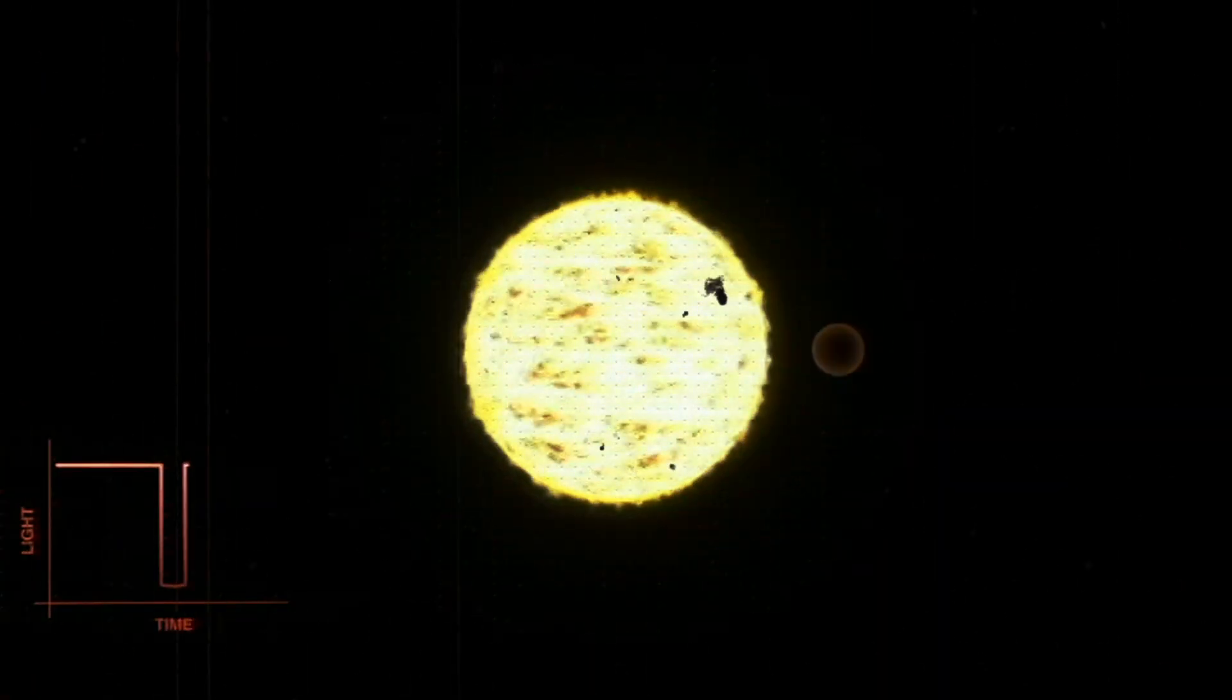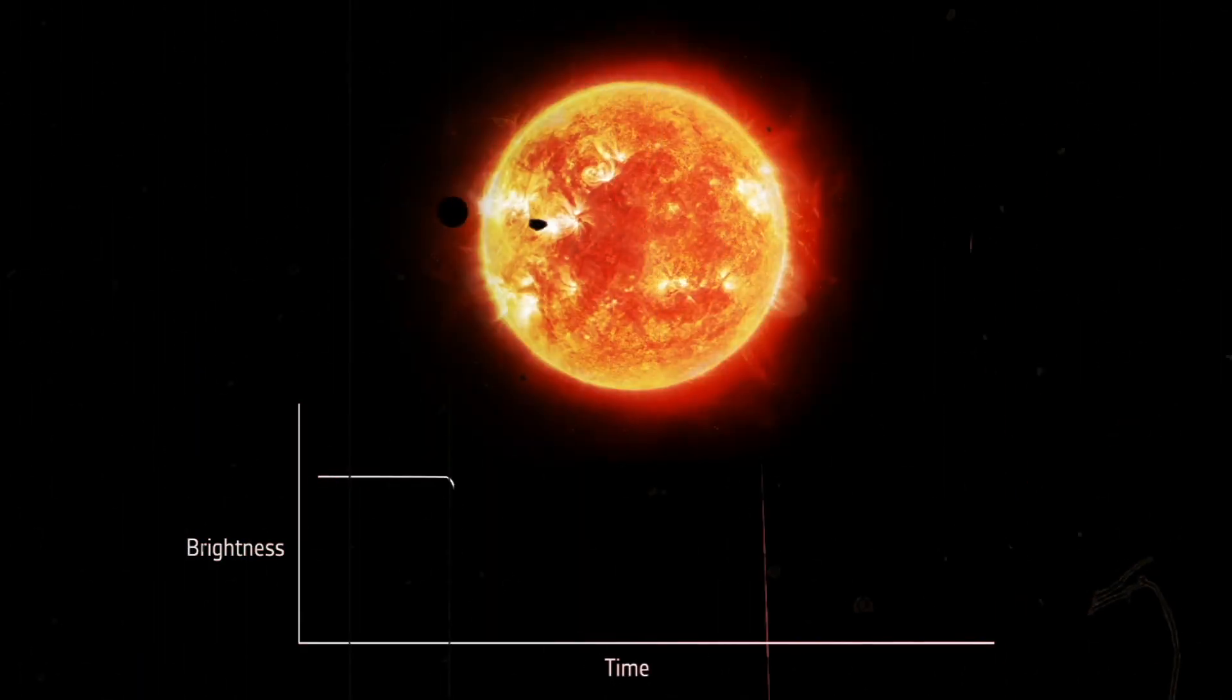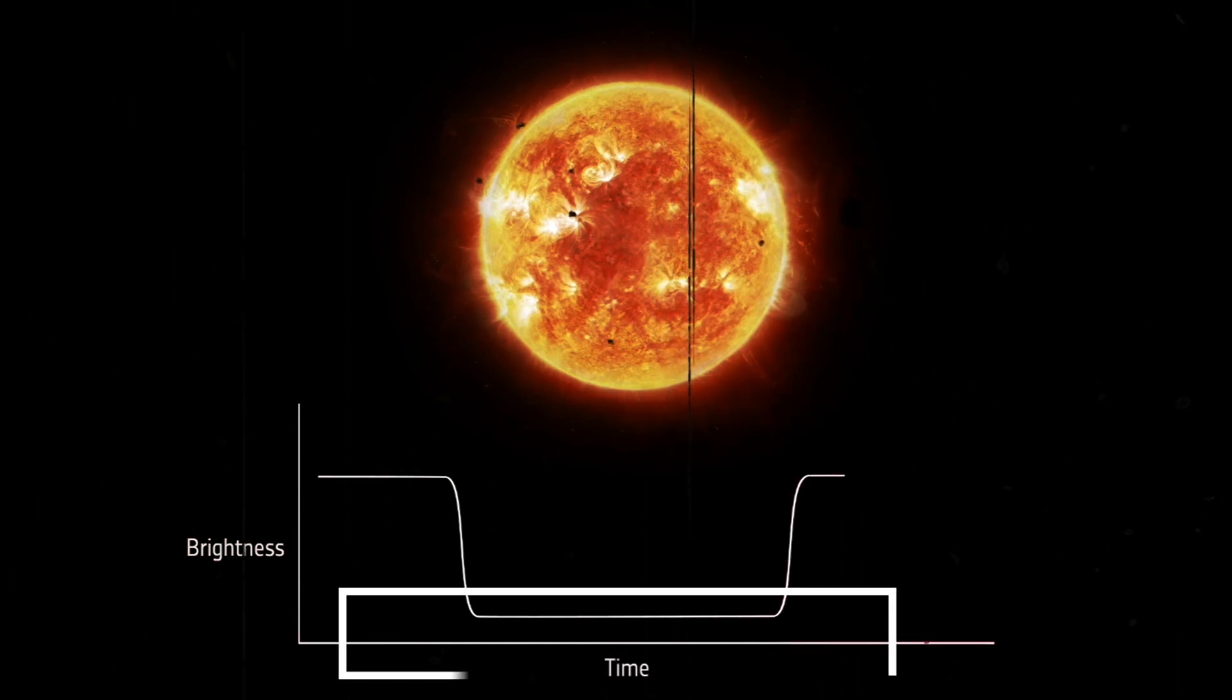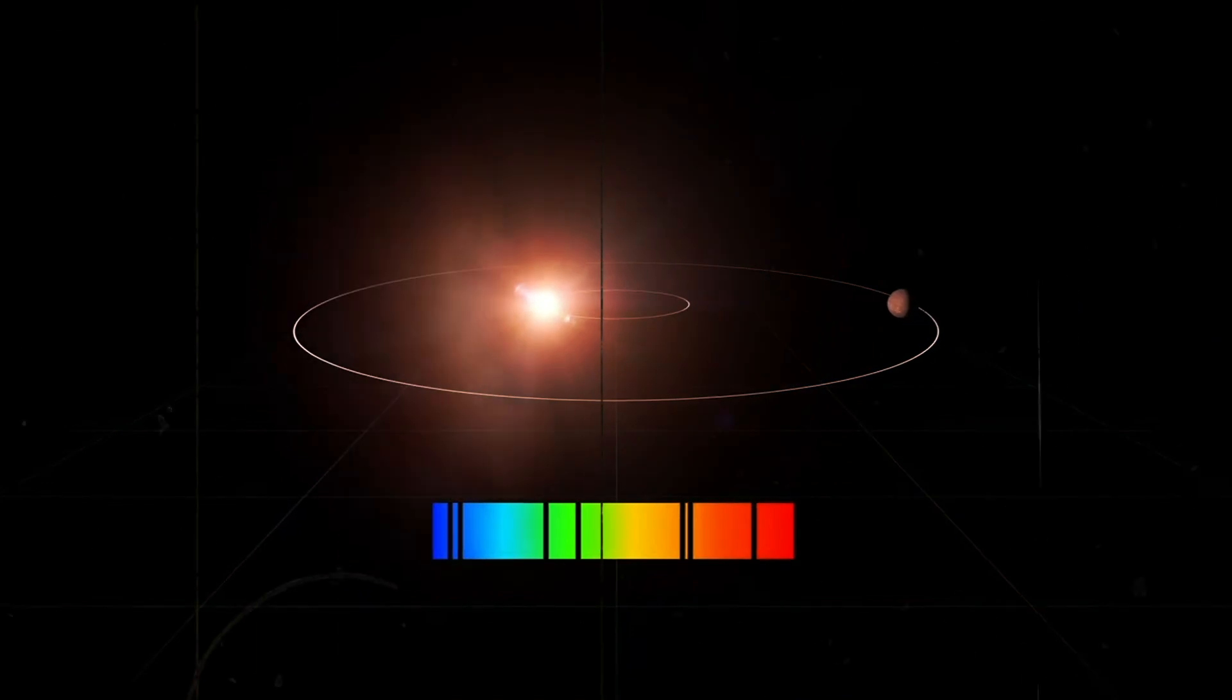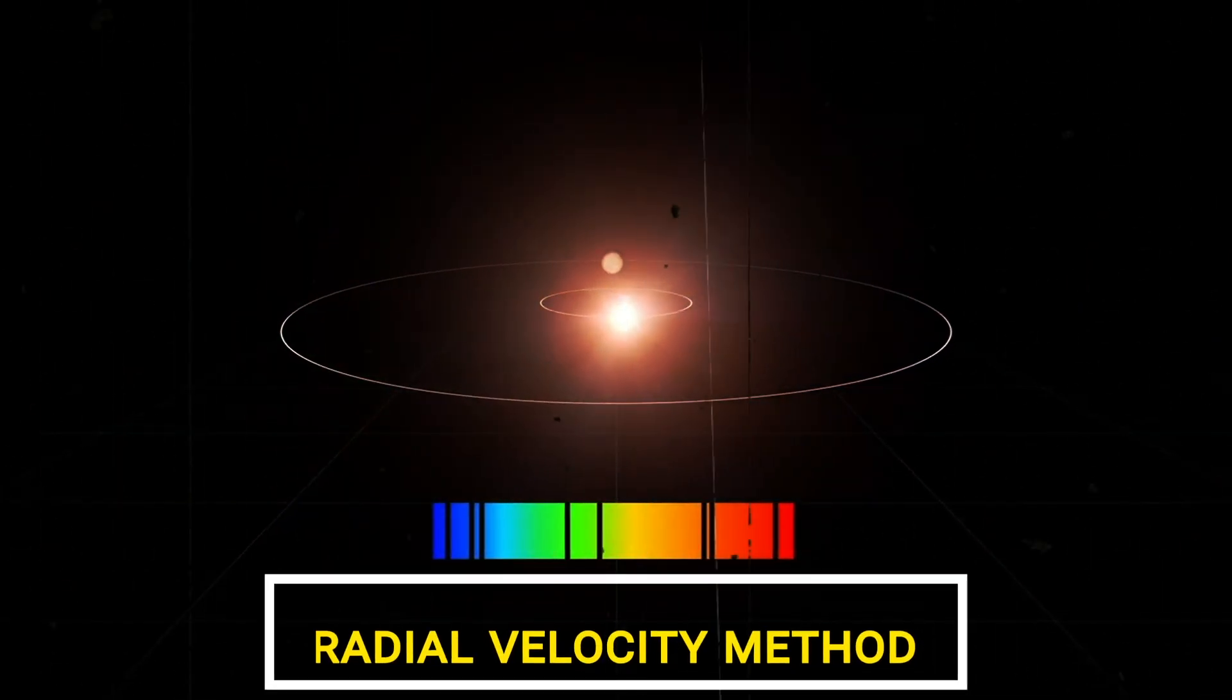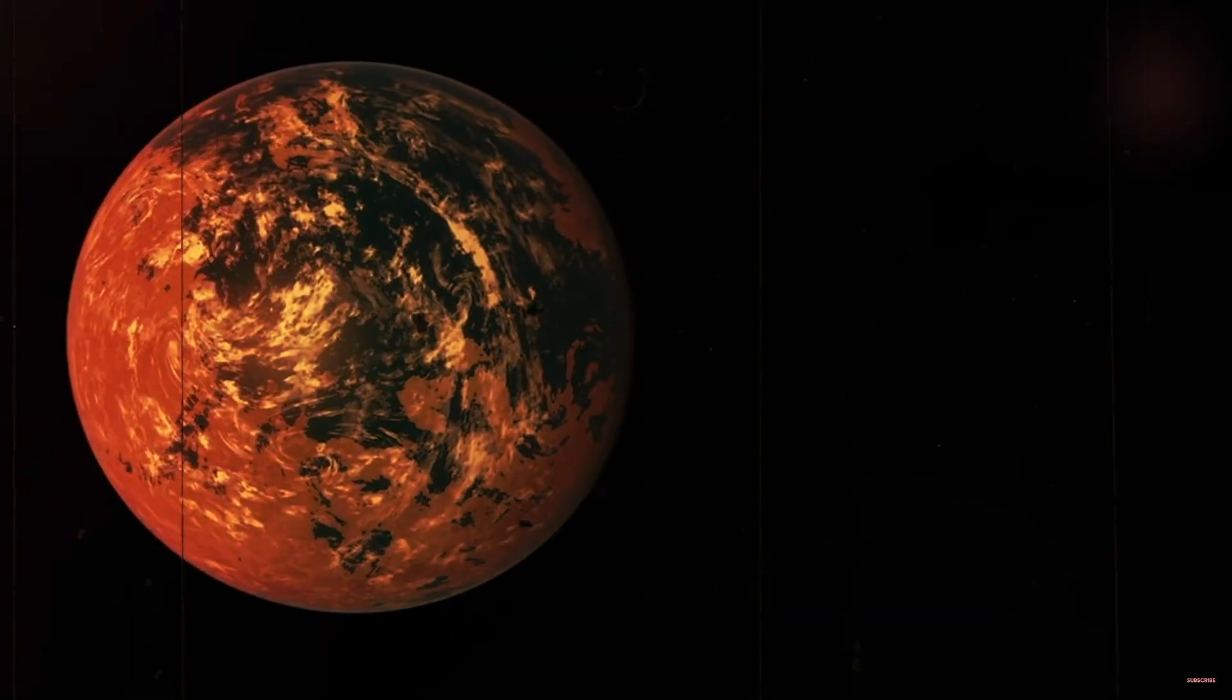Traditionally, exoplanet detection has relied on indirect methods, like measuring a slight decrease in a star's brightness as a planet transits in front of it, known as the transit method, or detecting the slight wobbling of a star caused by the gravitational pull of an orbiting planet, known as the radial velocity method. While these techniques have been successful, they offer limited information about exoplanet properties and characteristics.